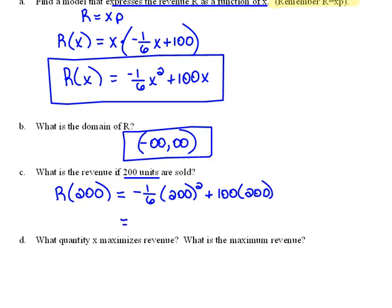And then when we plug this into our calculator, be very careful about your parentheses and things, we should get $13,333.33. So this would be the revenue if we sold 200 units.